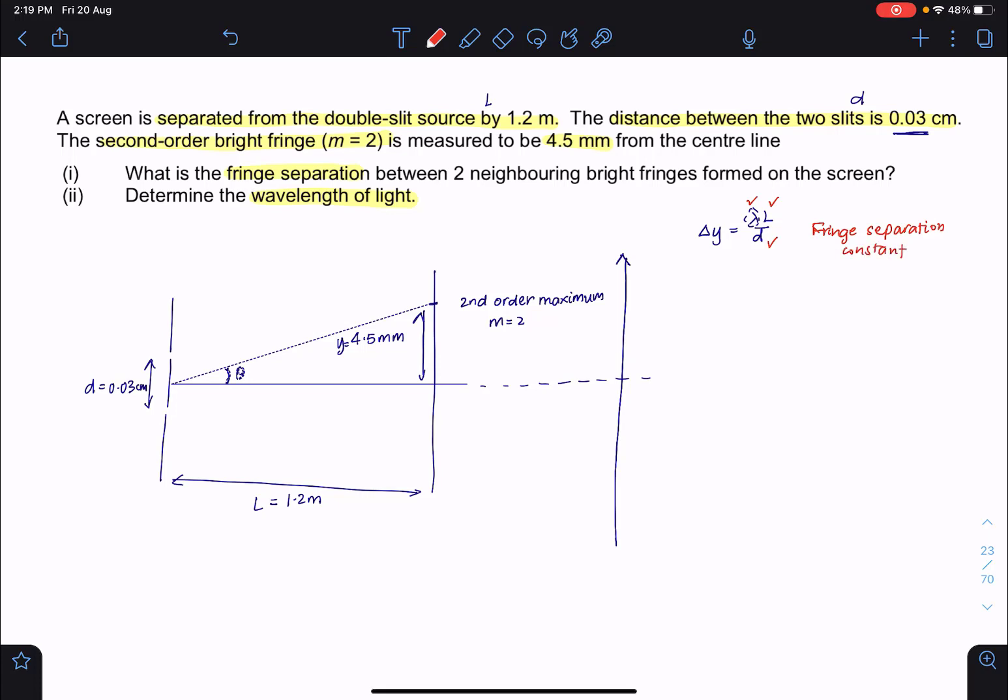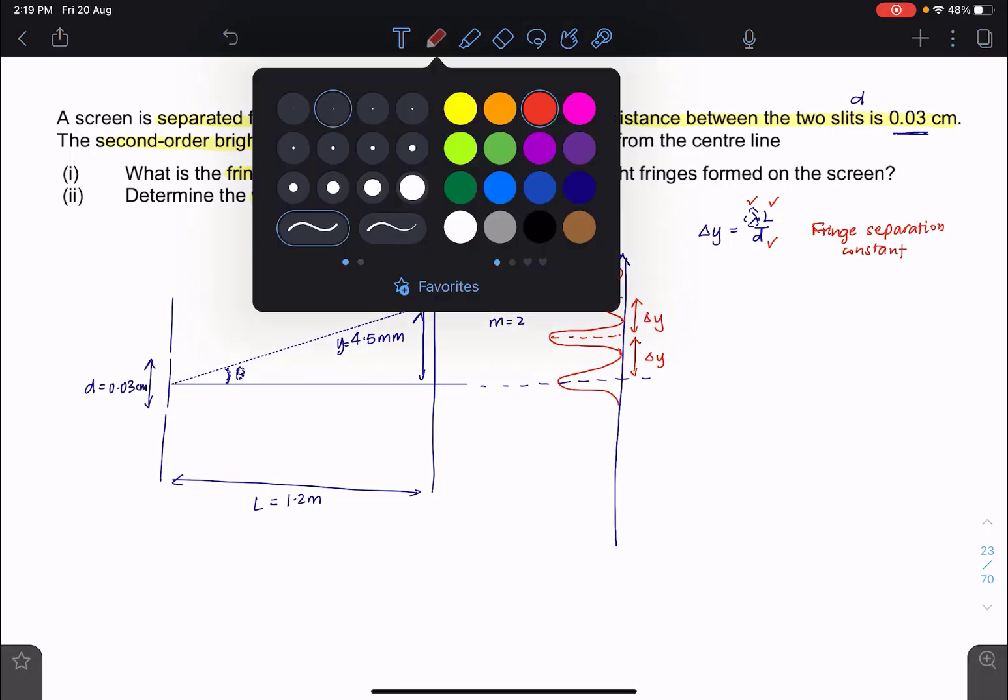If that's the case, if I draw my intensity pattern along this line, what would it look like? This is my 0th order. Then this is my 2nd order. Somewhere here is my 1st order. And what is my fringe separation? This is my fringe separation. Delta Y. This is also my fringe separation.